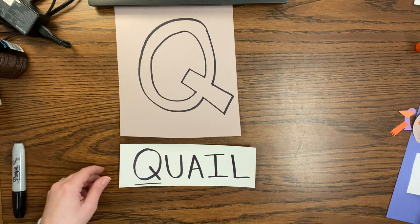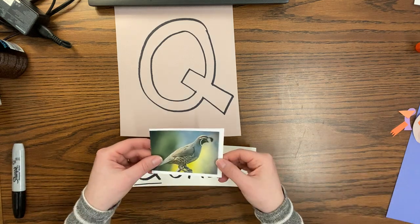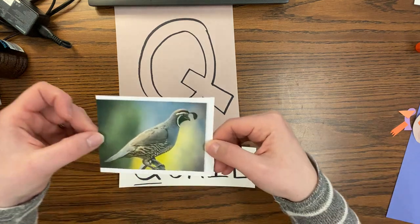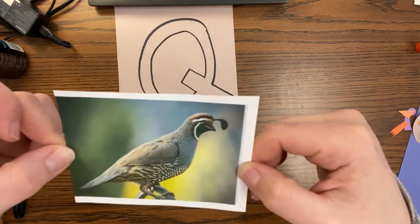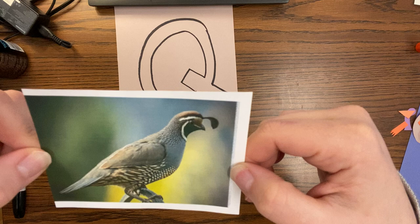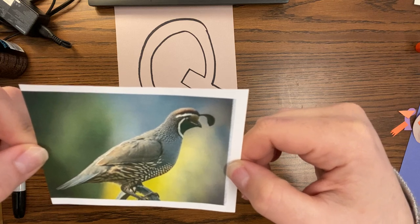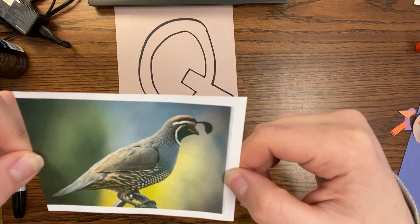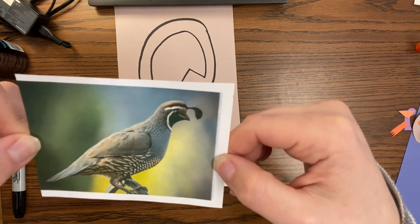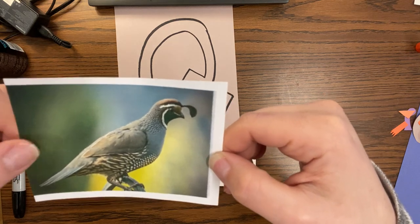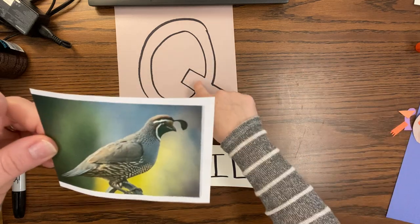Let's see, what is a quail? Here it is. Do you have this picture? This is the bird called a quail. It starts with the letter Q. We are going to make a quail with our Q.